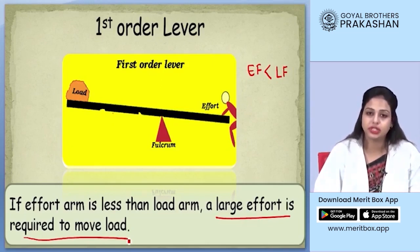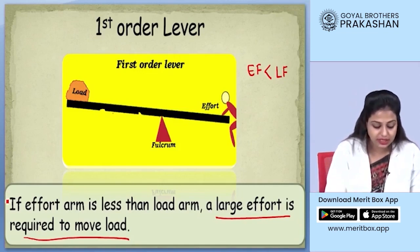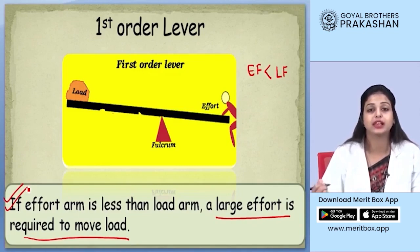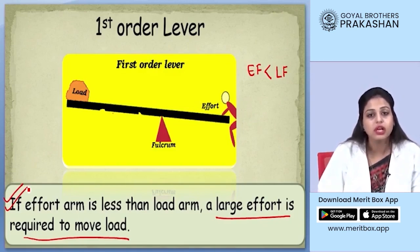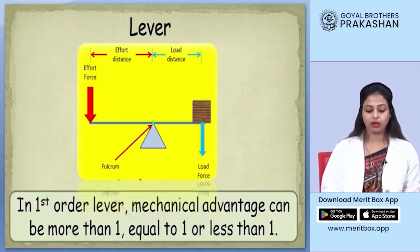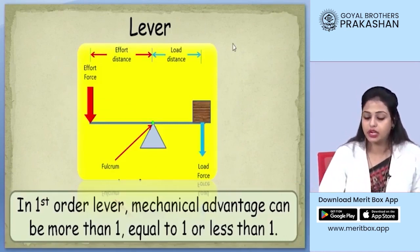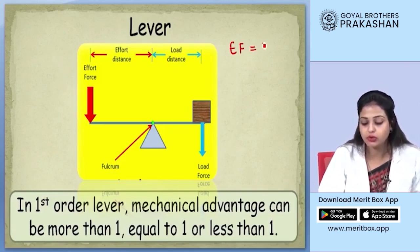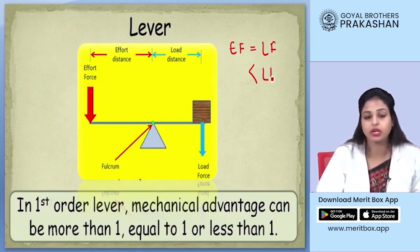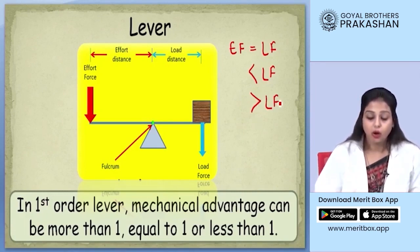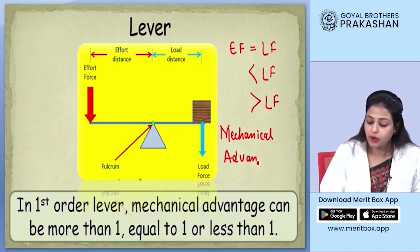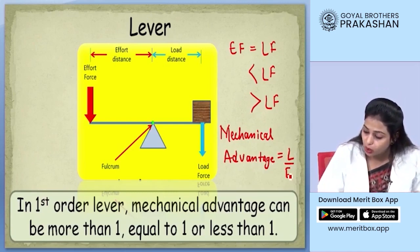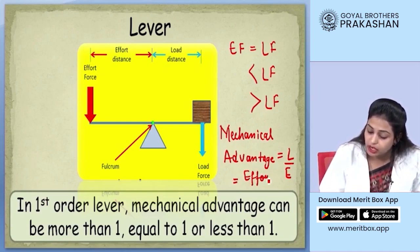We know that simple machines are used to reduce the effort and make the task at hand convenient. So in the case where the effort applied is large in quantity, this is not a very desirable situation for using a first order lever. Depending on the position of the fulcrum, the effort arm can be equal to, less than, or greater than the load arm. We also know that mechanical advantage is given by the formula: load upon effort, or effort arm upon load arm.